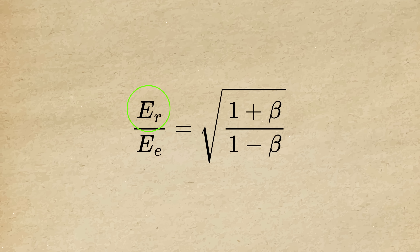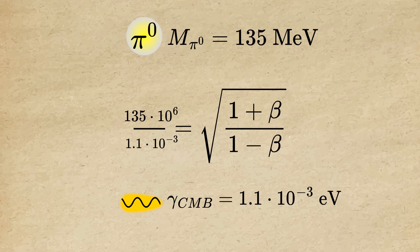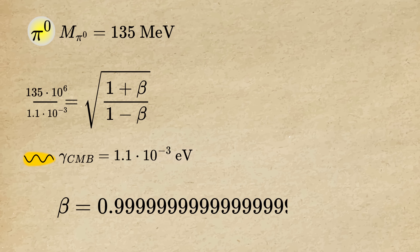Here, this is the energy of the CMB photon in the frame of the proton, and this is the rest frame energy. In order for this interaction to happen, the photon must have at least the energy of 135 mega electron volts. You can plug that into the equation and solve for beta, which is the velocity of the proton in units of the speed of light. There are more ways to calculate this limit — for example using invariant mass analysis — but this is the most intuitive one.